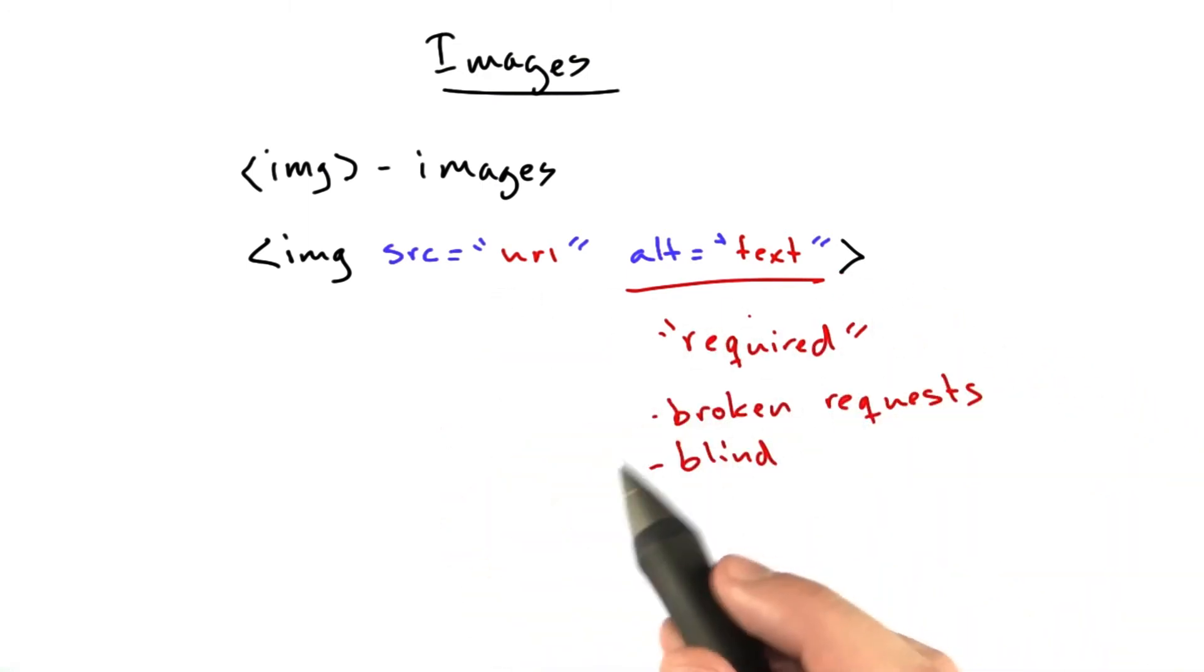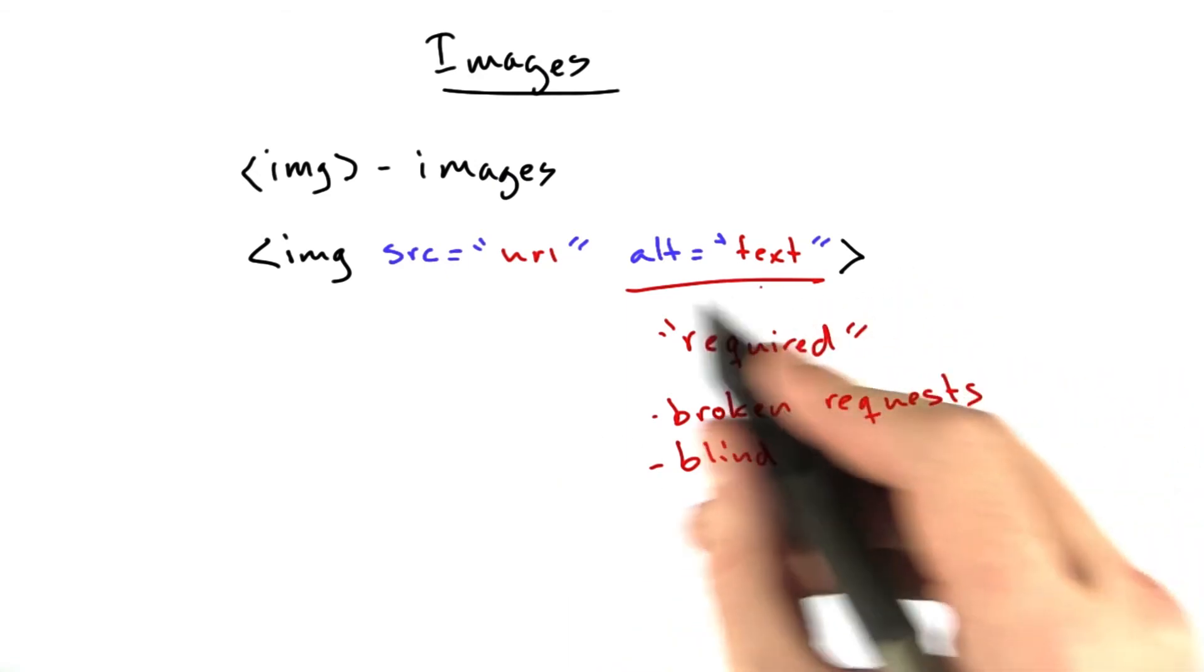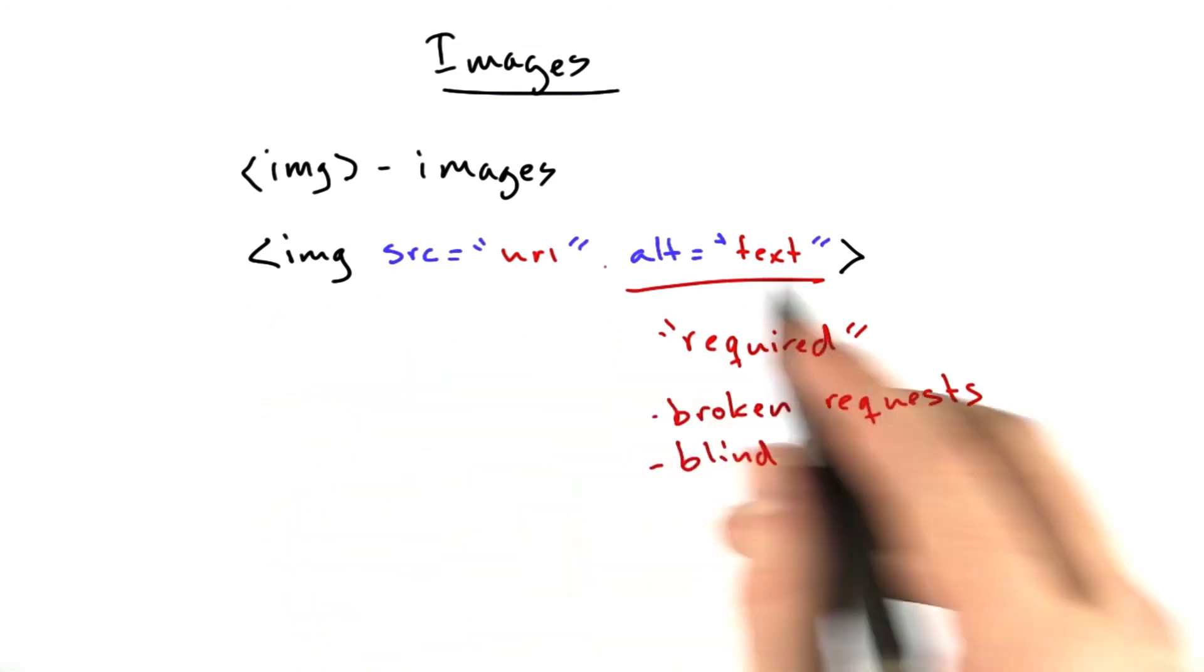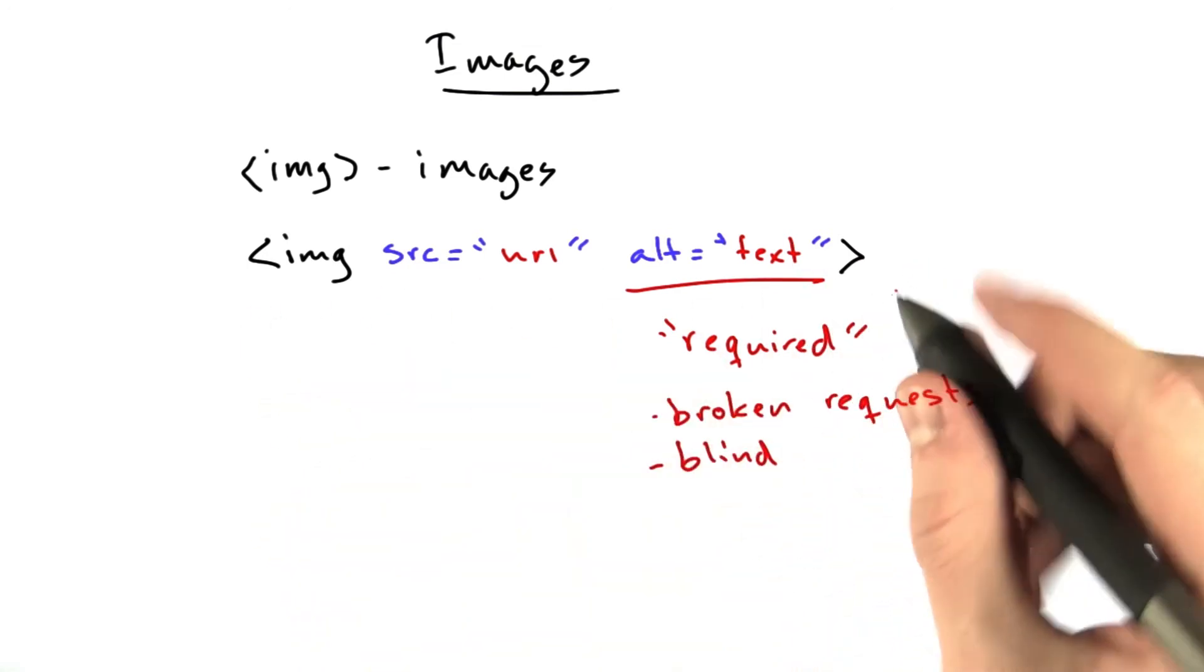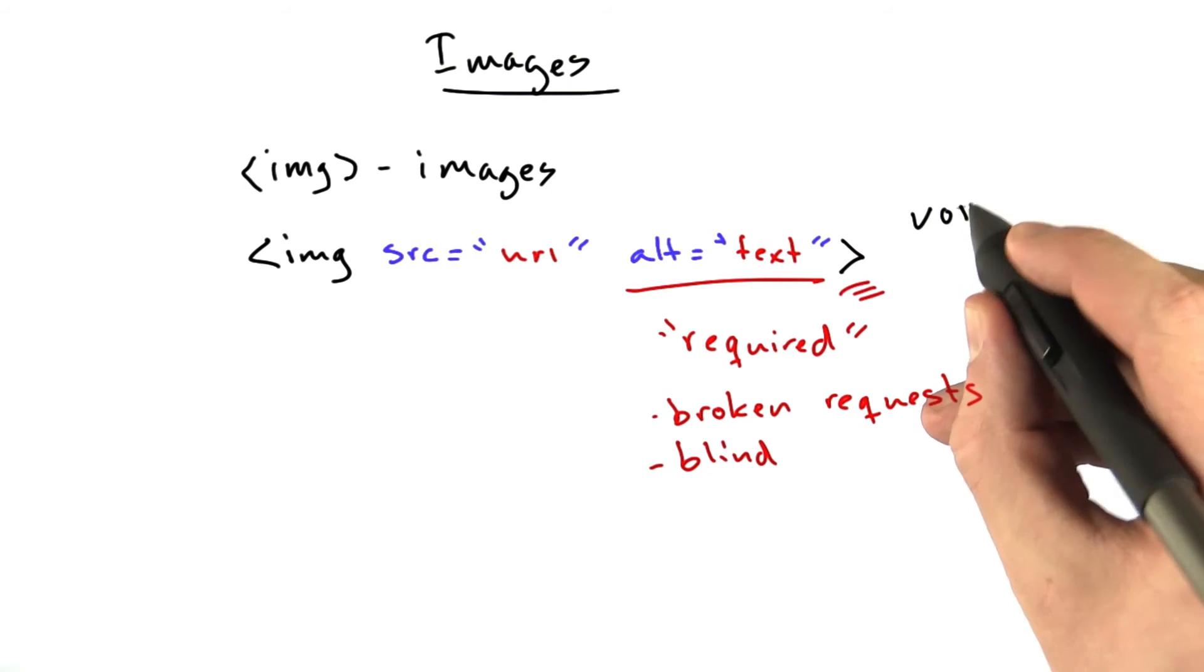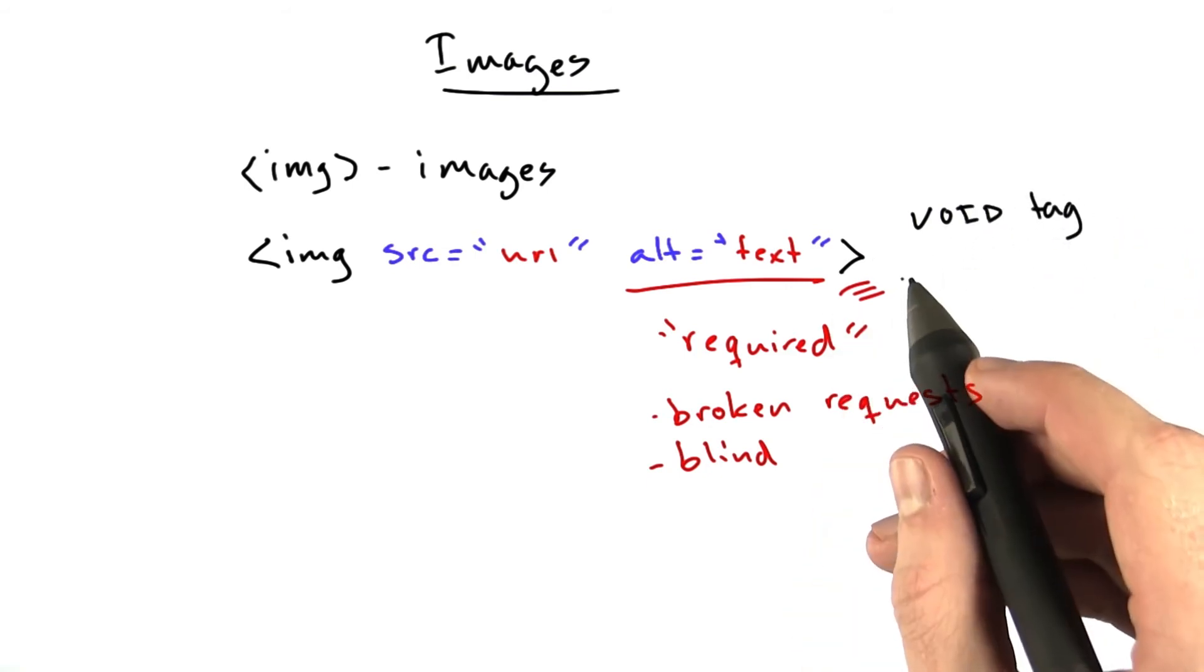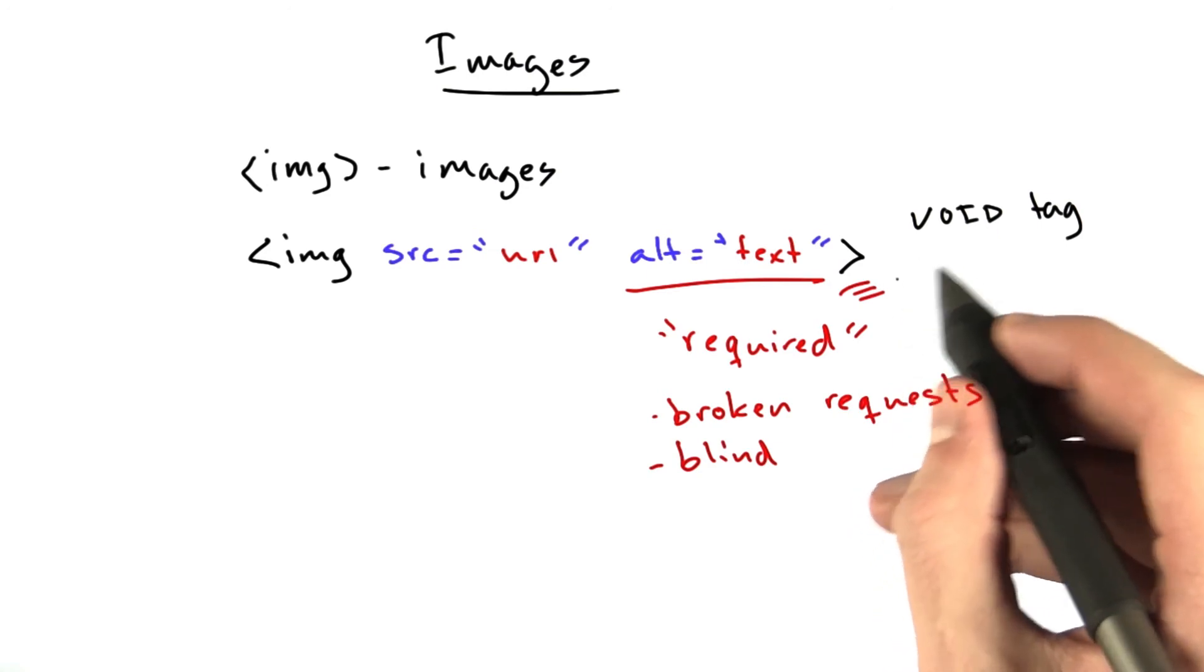And one other thing I'd like to point out here is every tag we've talked about so far has had a closing tag. Images don't. This is the entire tag. There's no contents to an image. See, it just ends right here. This is called a void tag. A void tag is a tag that has no content, and because it has no content, it doesn't need a closing tag.